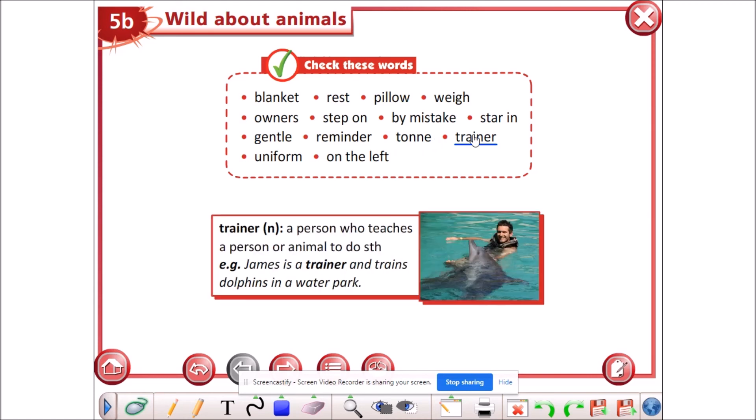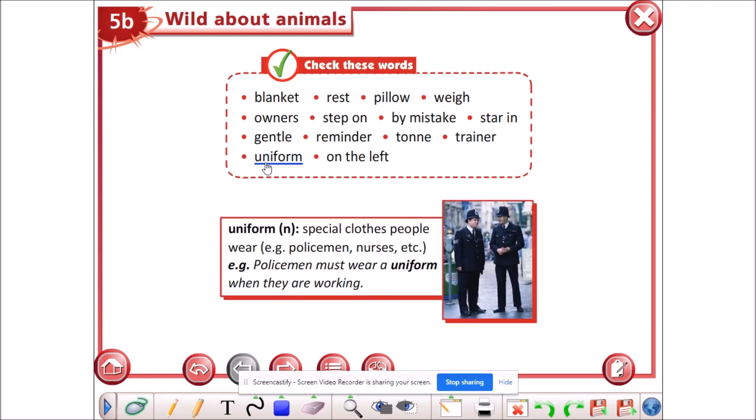Trainer, trainer is a noun. It means a person who teaches a person or an animal to do something. We have an example: James is a trainer and trains dolphins at a water park.